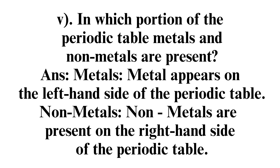Question 5: In which portion of the periodic table are metals and non-metals presented? Answer: Metals appear on the left-hand side of the periodic table, while non-metals are presented on the right-hand side of the periodic table.